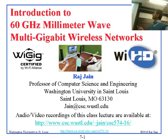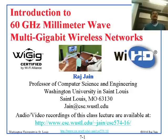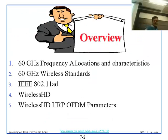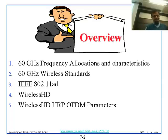This module is about 60 gigahertz millimeter wave. There are two logos here: YGIG and YHD, and we'll talk about those two. There's a picture of people doing very high speed transmission to their TV, playing some games at very high speed. We'll cover 60 gigahertz frequency allocation, 60 gigahertz standards, and then discuss two of these standards: 11AD and WirelessHD.